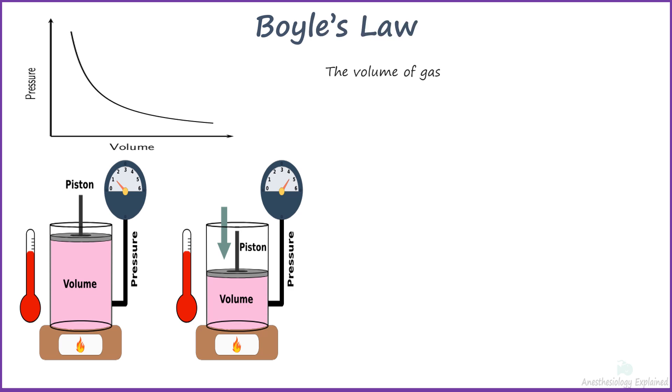Boyle's law is a gas law which states that the pressure exerted by a given mass of gas at a constant temperature is inversely proportional to the volume occupied by it. In other words, the pressure and volume of a gas are inversely proportional to each other as long as the temperature and the quantity of gas are kept constant.